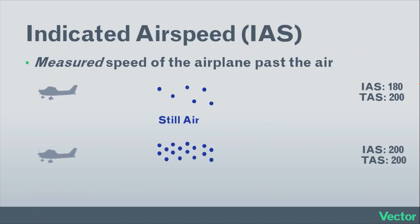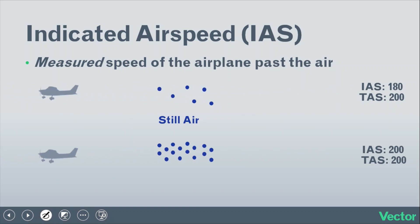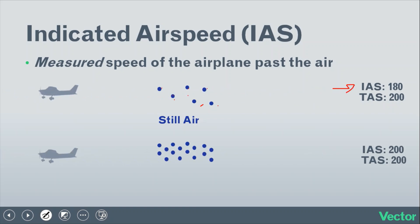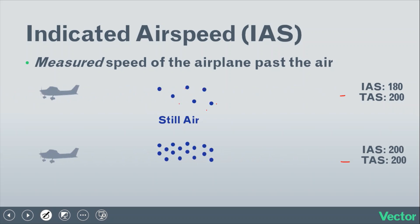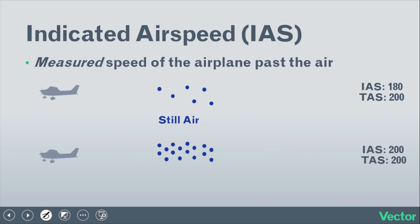Indicated airspeed is the measured speed of the airplane as it moves through the air, according to the pitot tube. The pitot tube measures airspeed using air pressure, and as altitude increases, air pressure decreases. So at a constant true airspeed, the airplane is still moving past air molecules at the same speed, but there are fewer of them entering the pitot tube. As a result, indicated airspeed will be less than true airspeed, and as altitude increases, indicated airspeed will decrease at a given true airspeed.